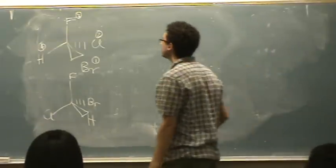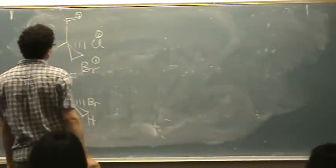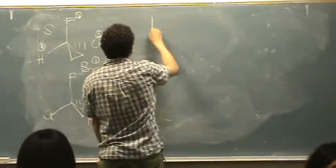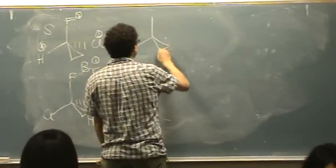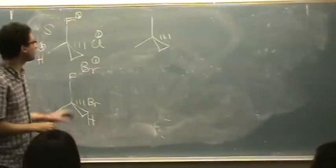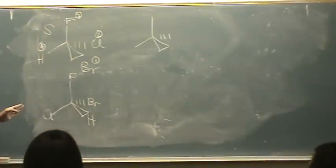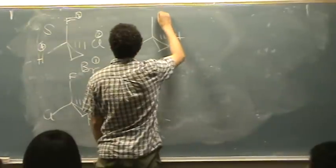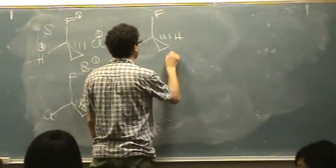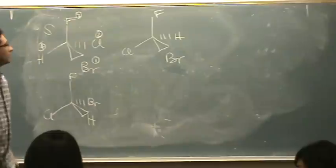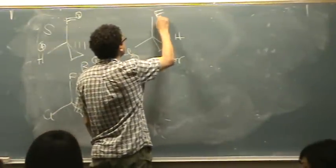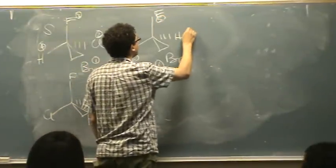If you do the paper method — so we know for sure it's S, but if you want to verify — that's where you take the group with priority 4 and switch it with whatever is in the dashed position going back into the board. So 4 and 2 have to switch in this case. Then you renumber: 2, 3, and 4.